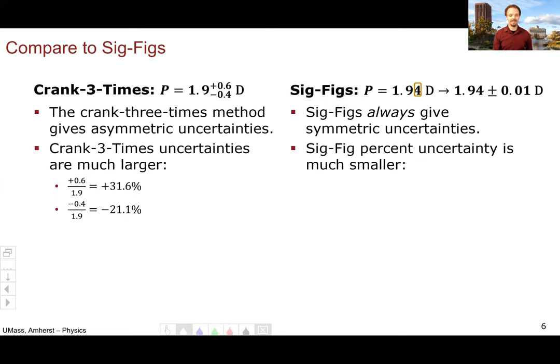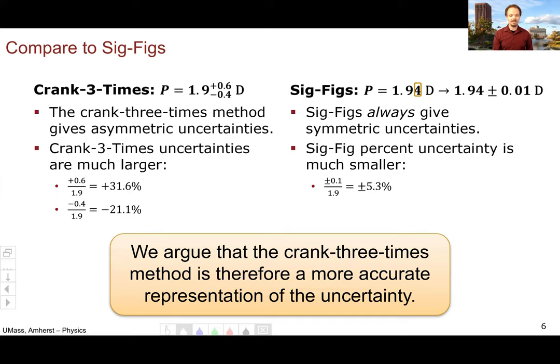In comparison, the significant figure percent uncertainty is much smaller, 0.01 over 1.9 or only 5.3 percent. Because of these two differences, we argue that the crank three times method is therefore a much more accurate representation of the uncertainty in our value.